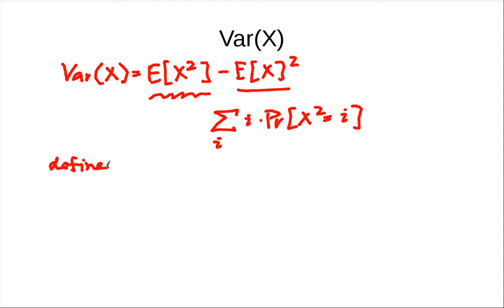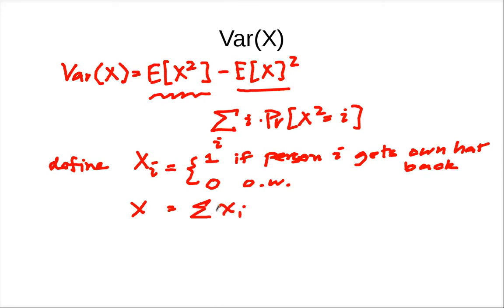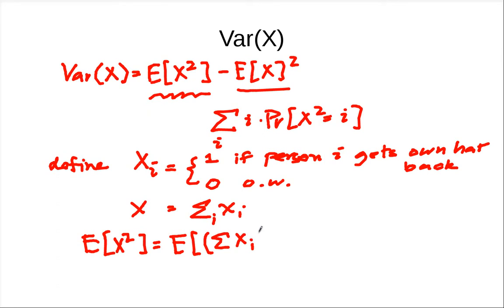We're going to use the same technique again: define smaller indicator random variables. Define Xi for i equals 1 to N to be 1 if person i gets their own hat back, and 0 otherwise. We know that X equals the sum of Xi. Now we would like to plug this into the expression for E[X²], computing the expected value of the square of the sum of Xi.